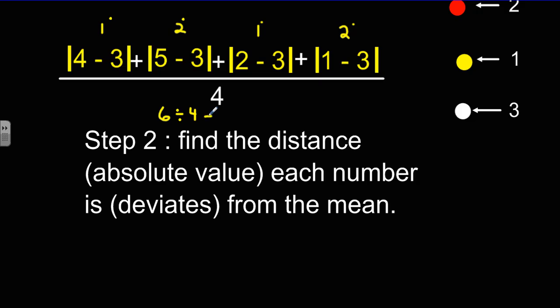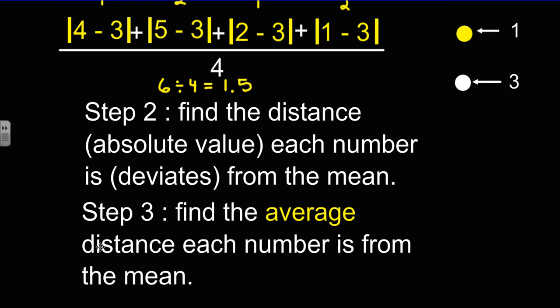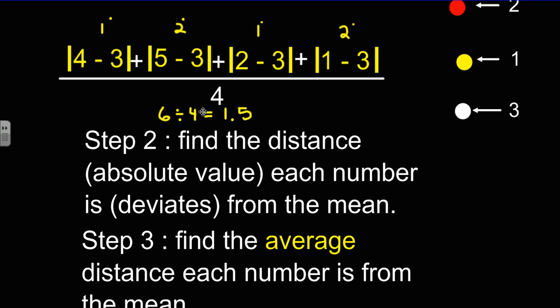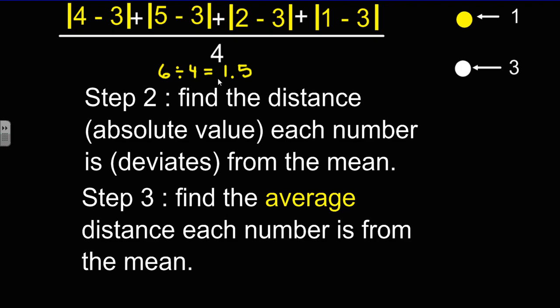And this would actually equal 6 divided by 4 is 1.5. So you find the average distance that each number is from the mean. To find that average, we had to divide by the number of pieces of data, and we came up with our MAD 1.5 without getting MAD.